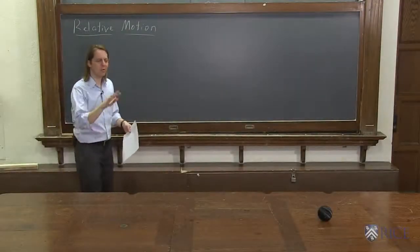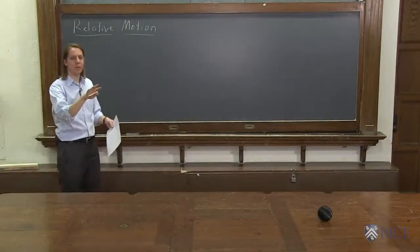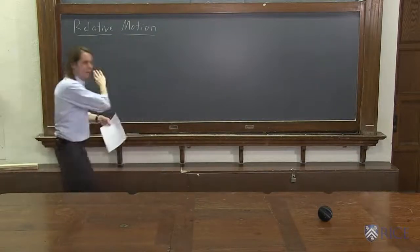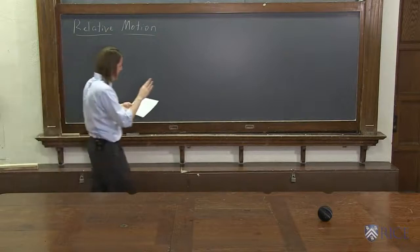Now we're going to look at relative motion, which is a way to describe the motion of an object in different reference frames. So I like my simple definition. This is often way overcomplicated. I'm going to show you an easy way to think about it.